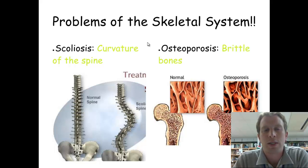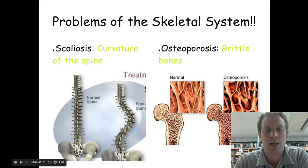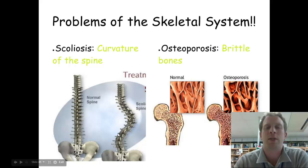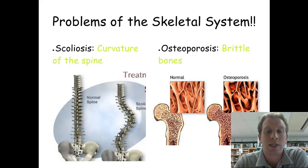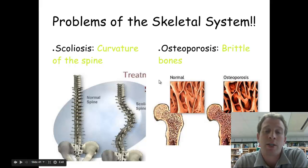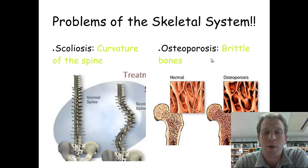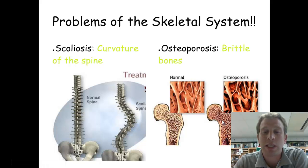Another condition is scoliosis. In PE class they often check you for scoliosis — it's a curvature of the spine. A normal spine has all the vertebrae stacked up in a straight pile, but a scoliosis spine has a curve that keeps you from standing up straight; sometimes you hunch over a little. They check for this when you're younger because if you take care of it early, it's not as big a deal. Last is osteoporosis — that prefix 'osteo' refers to bones. With osteoporosis you've got brittle bones. Bones are made of a matrix of bone tissue, and in osteoporosis that matrix isn't as thick or complex.